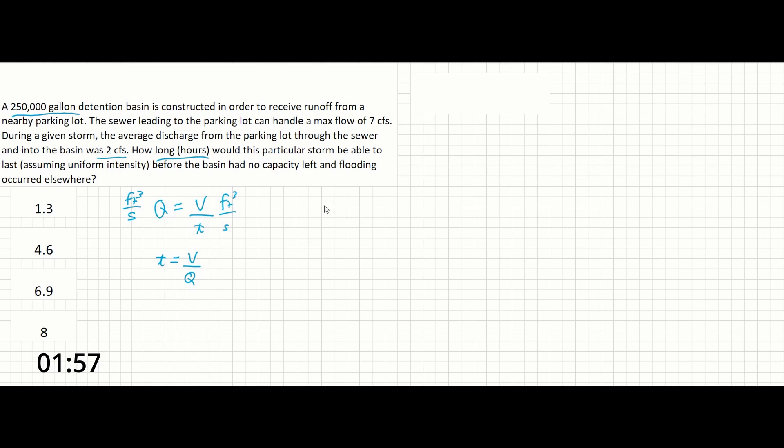So the first step is just going to be taking the area we were given and converting it. So we have 250,000 gallons. And according to our unit conversions in the reference manual, 1 cubic foot equals 7.48 gallons. And this will give us 33,422.5 cubic feet.